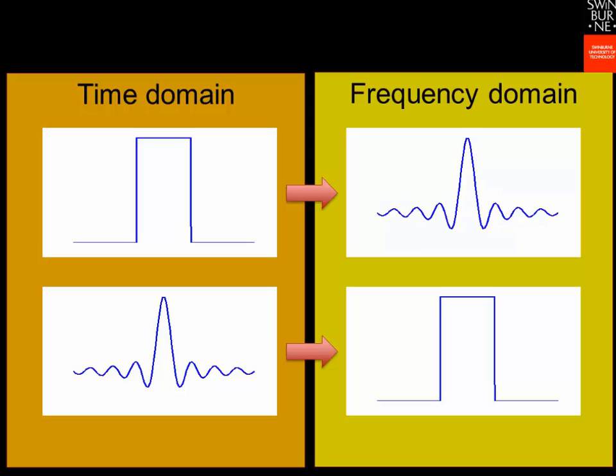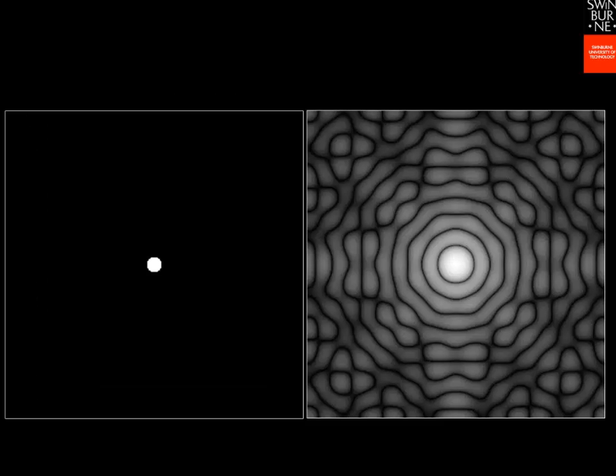We can also move images into the frequency domain. This image of parallel graduated lines becomes two white dots on a black background in the frequency domain. This white circle becomes a pattern that looks like ripples from a stone thrown in the water. And this white square on a black background becomes a cross.